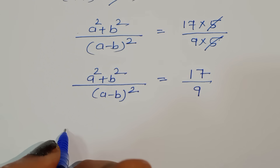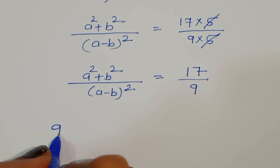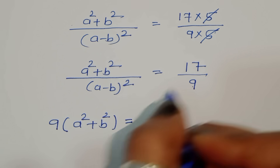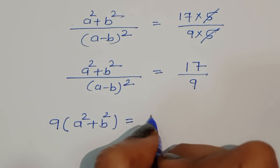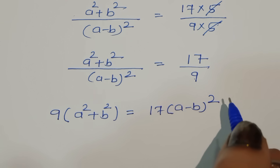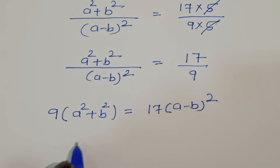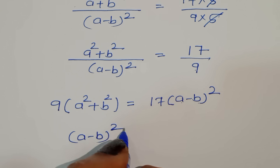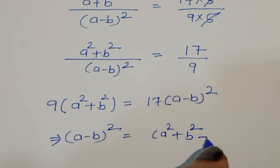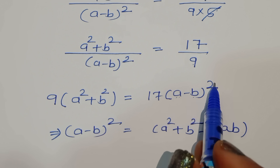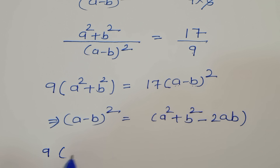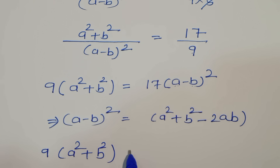Now doing cross multiplication, we get: 9(a² + b²) = 17(a - b)². We know the formula (a - b)² = a² + b² - 2ab, so we expand the right side: 9(a² + b²) = 17(a² + b² - 2ab).